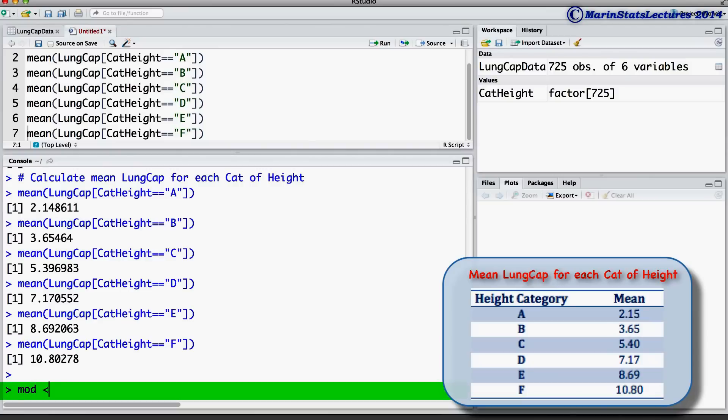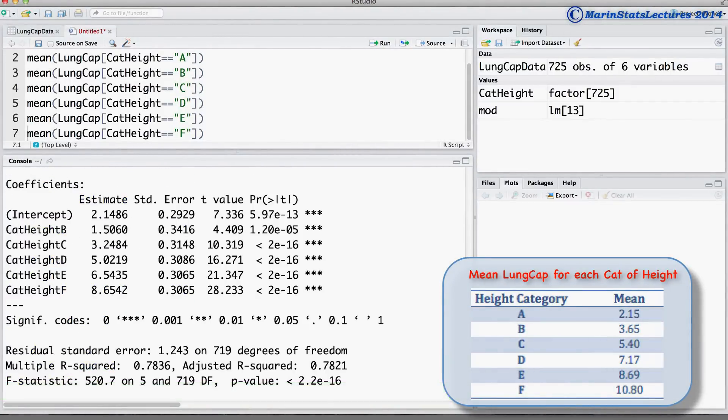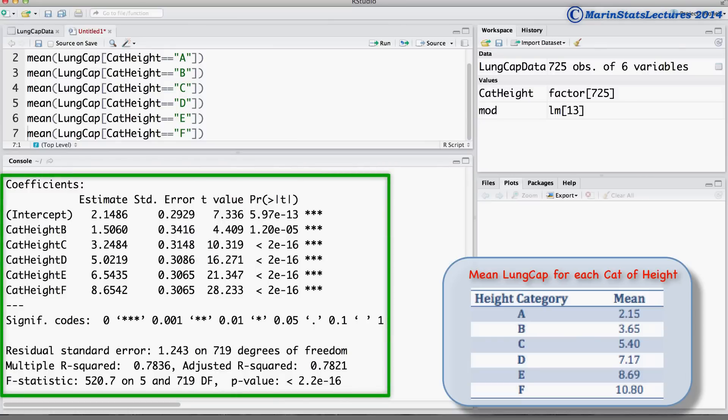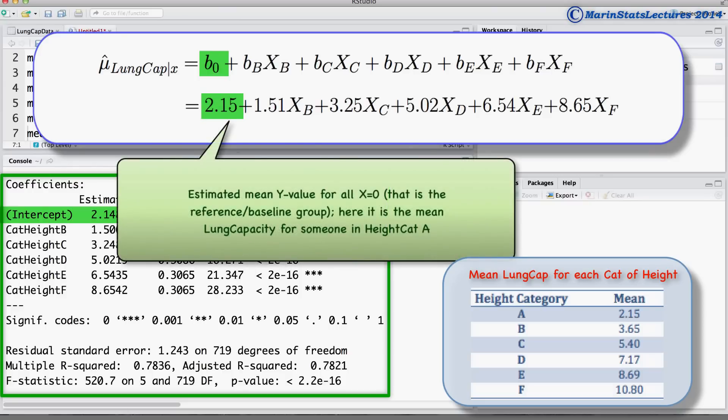Let's go ahead and fit a linear regression model. We will relate lung capacity to this variable categorical height. We can ask for a summary of this model, and here we can see the R output as well as the fitted model. The intercept or constant term B0 of 2.15 is the estimated mean y value for all x's equal 0, that is our reference or baseline group.